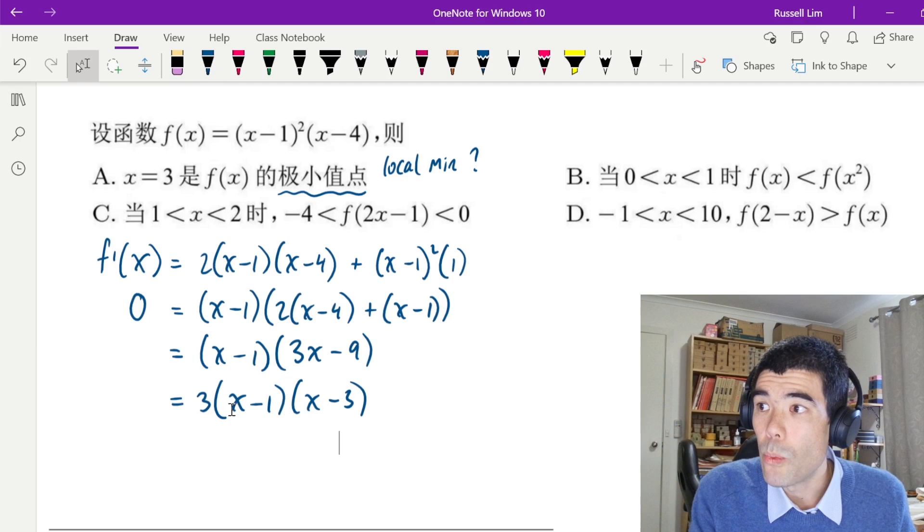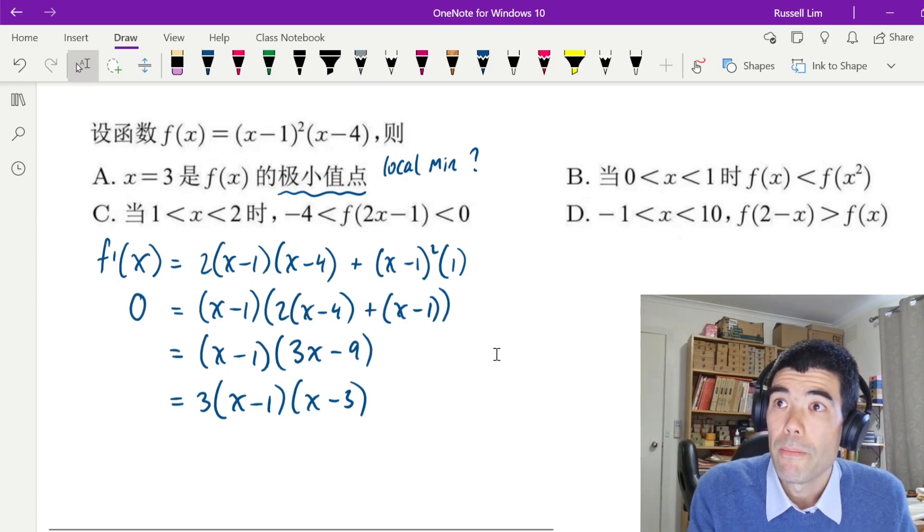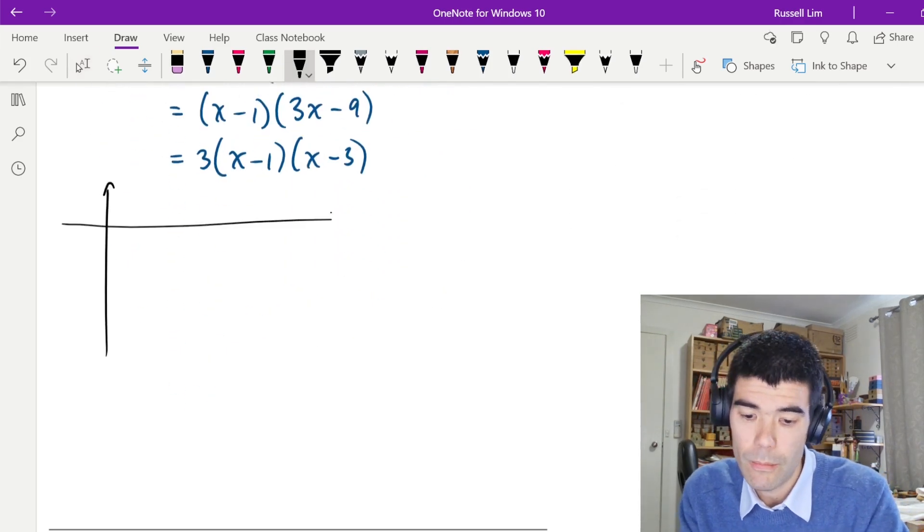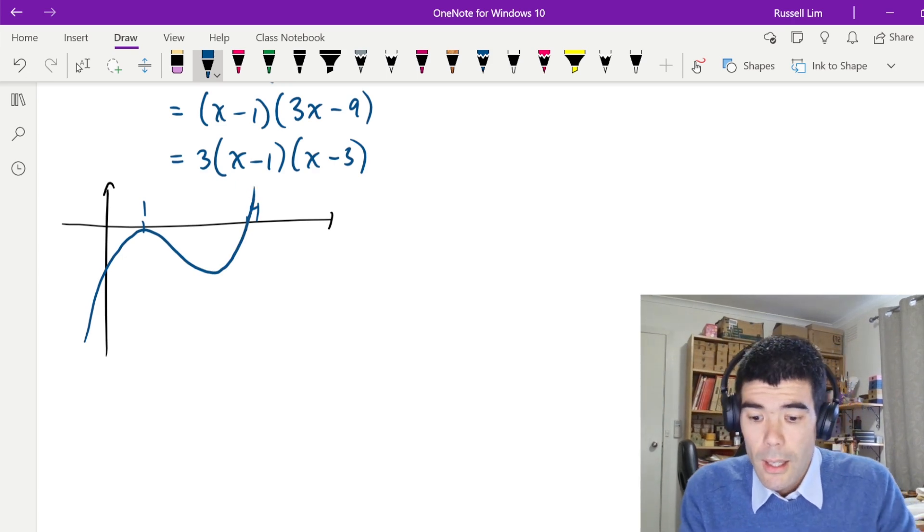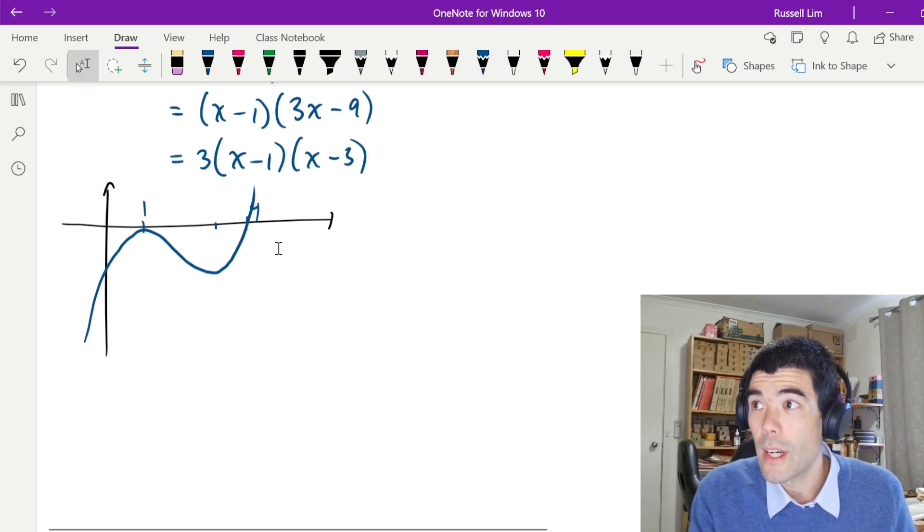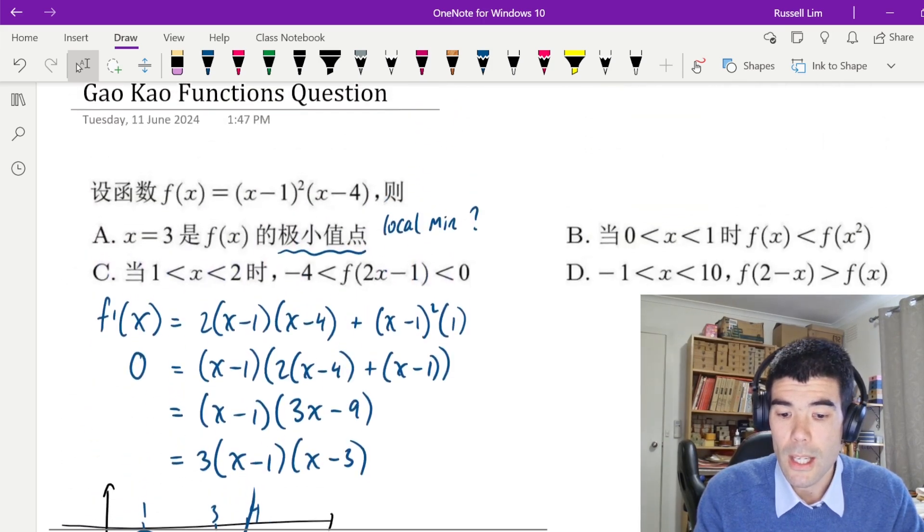Alright, so we can say this will be 0 when x is 1 and x is 3. So then we just need to tell, well, is it going to be a local minimum or a local maximum? And in order to do that, probably we can sketch a little graph. So if this cubic is going to have intercepts at 1 and 4, it's also going to have a turning point at (1,0), and it's a positive cubic. So the shape will be something like this. So we can see that in our case, we know there's a stationary point when x equals 3. And we can see from the graph that yes, it is going to be a local minimum. So this option is correct.